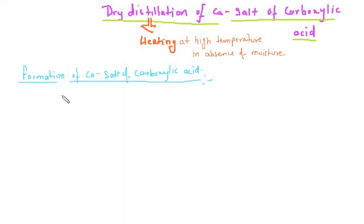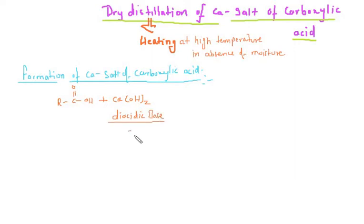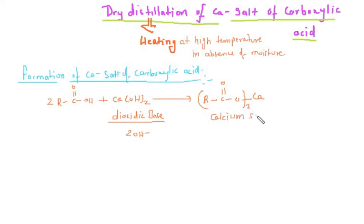It's very simple — we take a carboxylic acid, RCOOH, and react it with calcium hydroxide. Since calcium hydroxide is a diacidic base, meaning it gives 2 OH⁻, it requires 2 moles of carboxylic acid. A neutralization reaction takes place, giving us (RCOO)₂Ca — the calcium salt of carboxylic acid — and water as the other product.